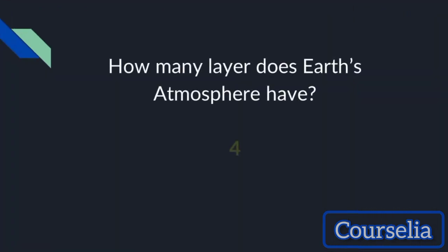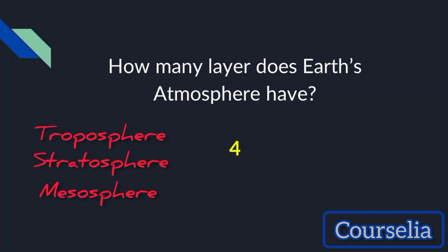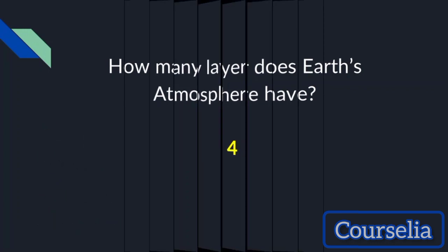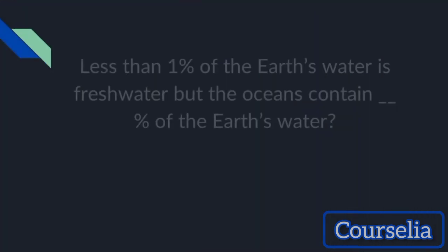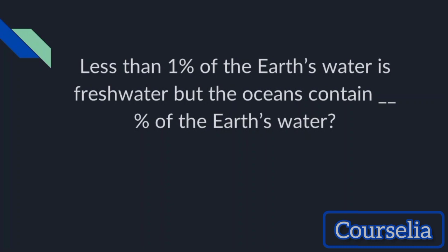Earth's atmosphere has four layers: Troposphere, Stratosphere, Mesosphere, and Thermosphere. Less than 1% of Earth's water is fresh water, but the oceans contain how much percent of Earth's water?